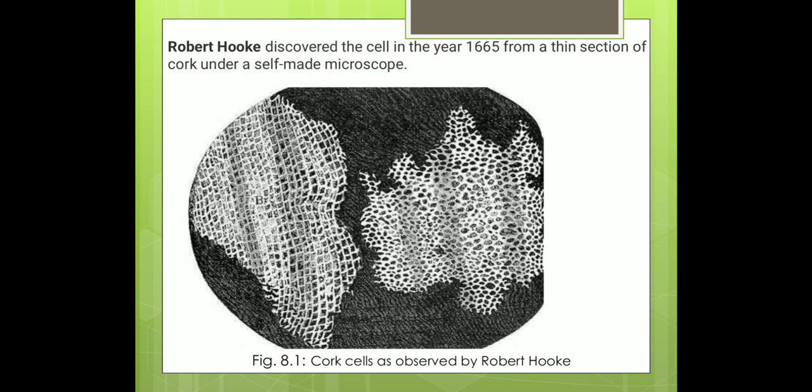These boxes, as you can see in the picture, appeared like a honeycomb. He also noticed that one box was separated from the other by a wall or partition. Robert Hooke coined the term 'cell' for each box. However, the cells in the cork were actually dead cells because the sample was taken from the bark of a tree.